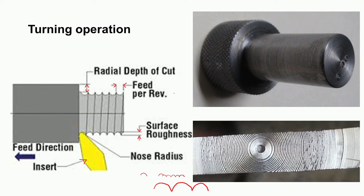In this diagram we can see a turned component. On the face — the faced portion — we can see concentric circles, and on the periphery we see the tool marks. This is another face-turned surface where we can see concentric circles, a bur at the centre, and burrs on the surface. When the feed rate is varied, this roughness will also vary.